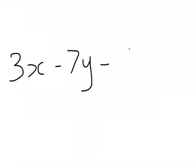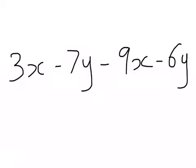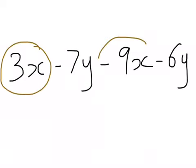Last example. Say I've got 3x - 7y - 9x - 6y. A little bit more difficult only because of the negatives, but that's fine. First thing, always underline or highlight your like terms. 3x - 9x gives me -6x.